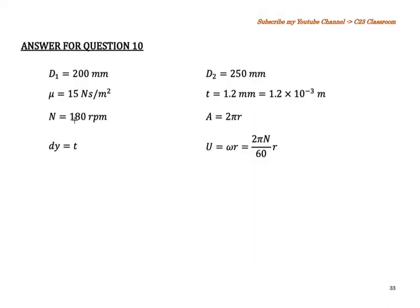We list all the parameters: D₁ is the inner diameter, D₂ is the outer diameter, μ is the dynamic viscosity, and the rotational speed is 180 rpm. Then dy equals t, the thickness. We also have the area relationship and the relationship between linear and rotational speed: U = ω·r = (2πN/60)·r.